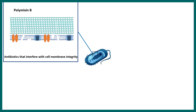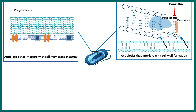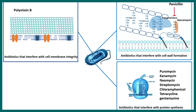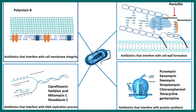There are many ways by which antibiotics can work. Polymyxin B interferes with cell membrane integrity and thereby kills the bacteria. Beta-lactam antibiotics such as penicillin and vancomycin act on the cell wall. A group of antibiotics including puromycin, kanamycin, neomycin, and streptomycin all interfere with protein synthesis or translation. Another category — novobiocin, mitomycin, nalidixic acid, ciprofloxacin — interferes with replication. This slide is really useful for revision.